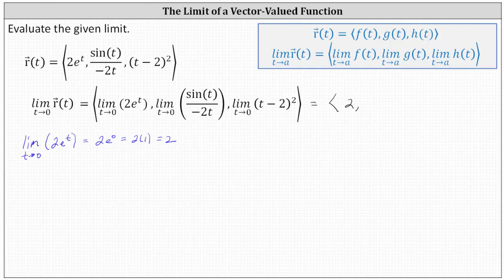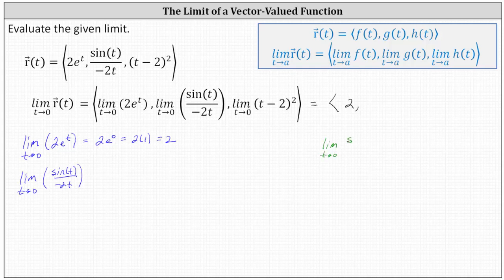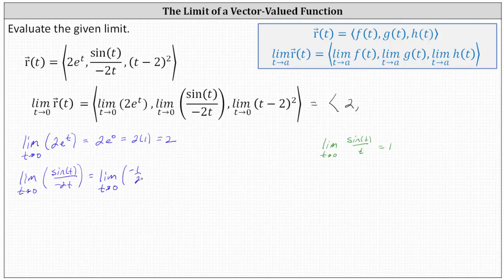Now let's consider the limit of the y component: the limit as t approaches zero of sine t divided by negative two t. This should remind us of the special limit — the limit as t approaches zero of sine t divided by t is equal to one. We can rewrite our expression as negative one-half times sine t divided by t, giving us a limit of negative one-half — the y component of the vector.